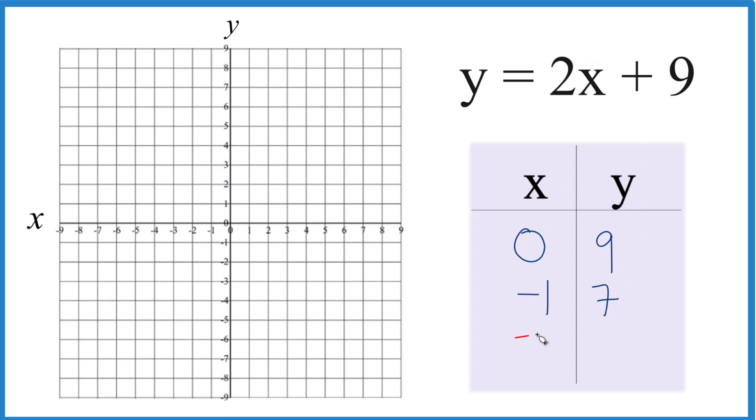And how about negative 2? 2 times negative 2 is negative 4. Negative 4 plus 9 gives us 5. So these are the points we're going to graph with the equation y equals 2x plus 9.